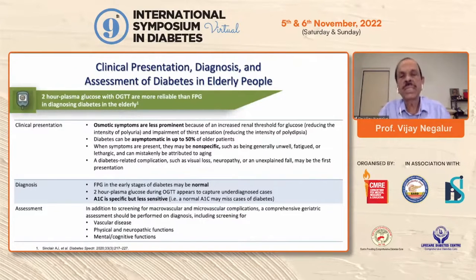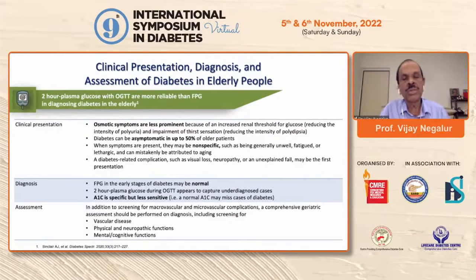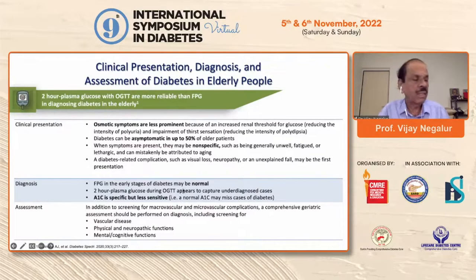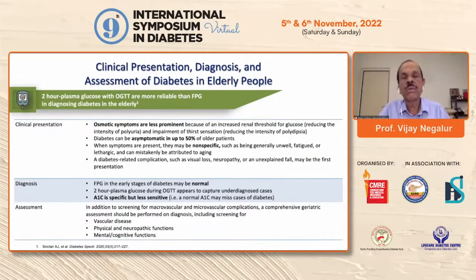Regarding diagnosis in elderly patients, the two-hour plasma glucose on oral glucose tolerance test is more reliable than fasting plasma glucose, because fasting plasma glucose can be normal in the early part of diabetes. HbA1c is specific but less sensitive in elderly populations, as they often have very abnormal A1C values. Therefore, A1C cannot be taken as the gold standard to diagnose diabetes in the elderly; we need the two-hour OGTT to capture undiagnosed diabetes.